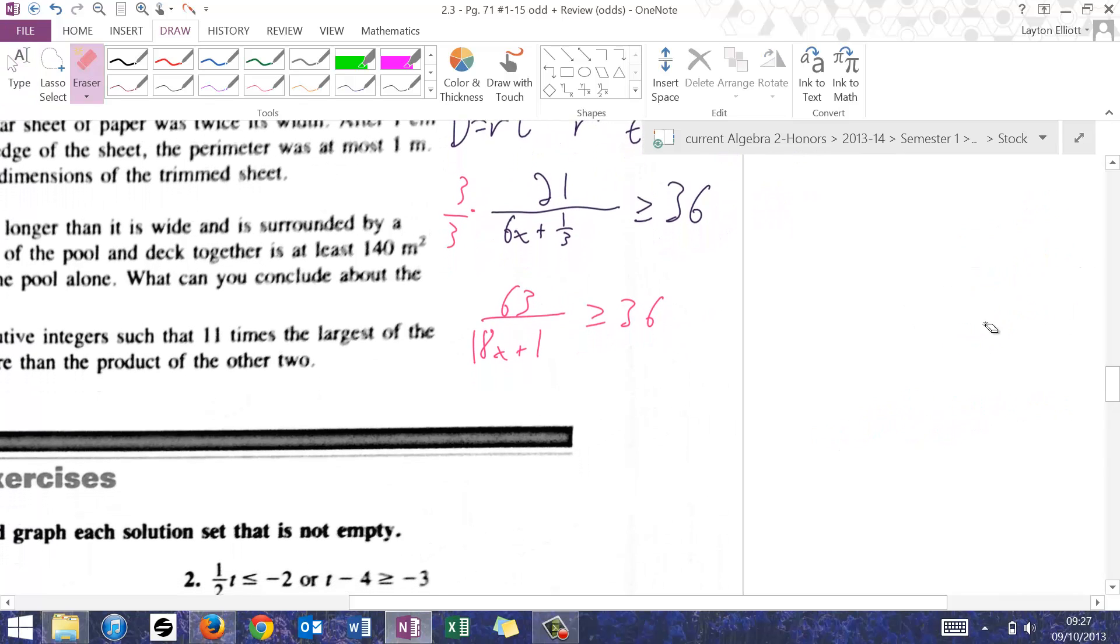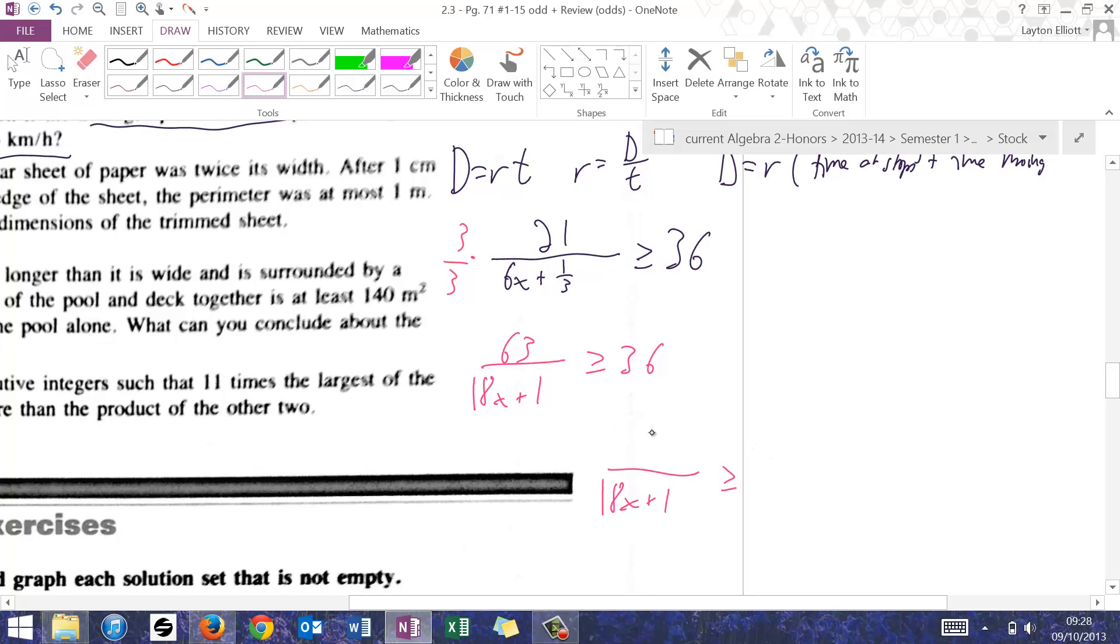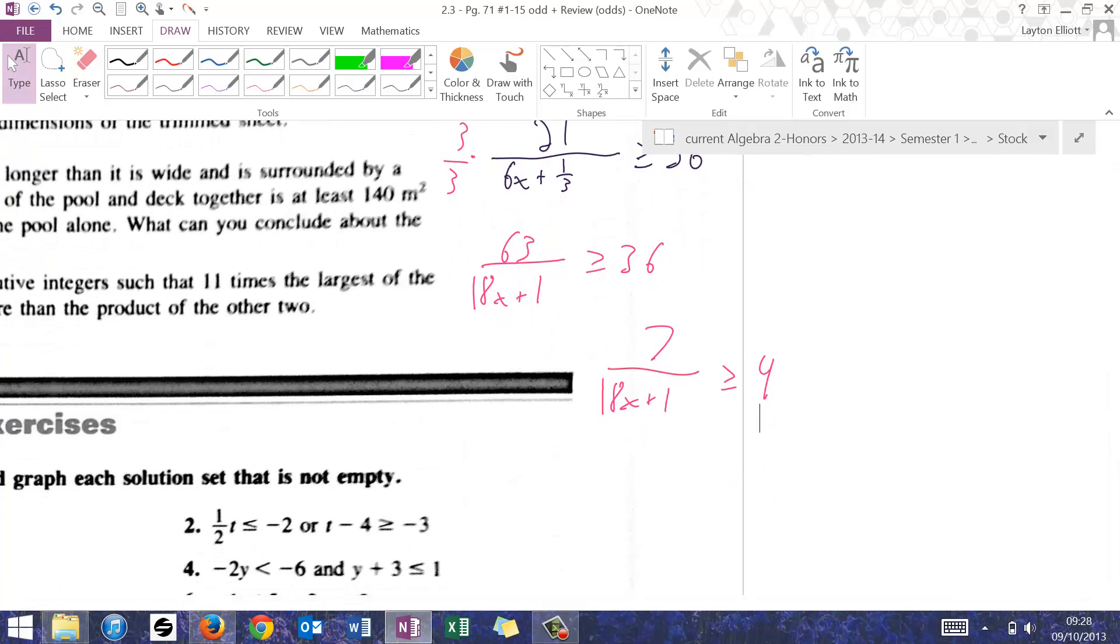Now before I do any cross multiplying, I could divide both sides. Let's see, I'd get 21 over 18x plus 1 is greater than or equal to 12—actually, sorry, dividing by 9 instead. I'd get 7 over 18x plus 1 is greater than or equal to 4. Now this is a little bit smaller.